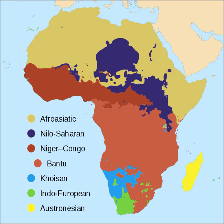Of the 1 billion Africans in 2009, about 17% speak an Arabic dialect, about 10% speak Swahili — the lingua franca of Southeast Africa — about 5% speak a Berber dialect, and about 5% speak Hausa, which serves as a lingua franca in much of the Sahel. Portuguese is the official language of Mozambique, and the economies of Angola and Mozambique are quickly becoming economic powerhouses in Africa.